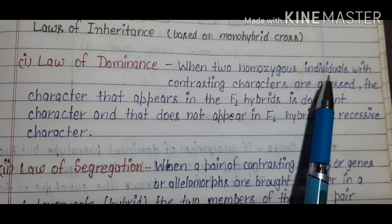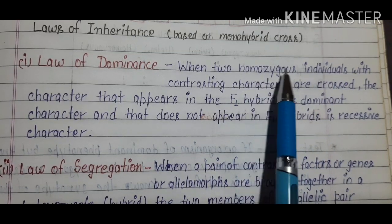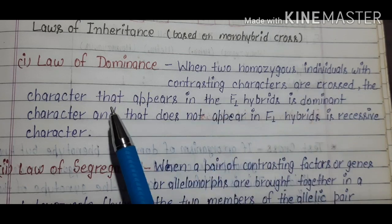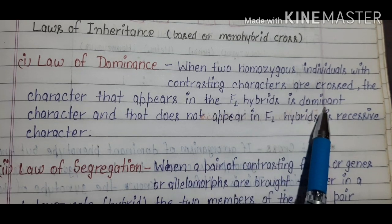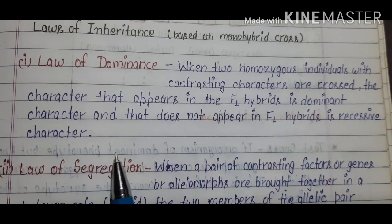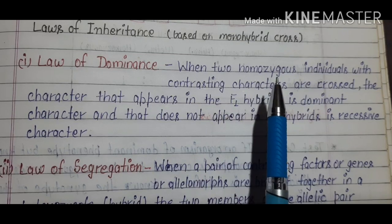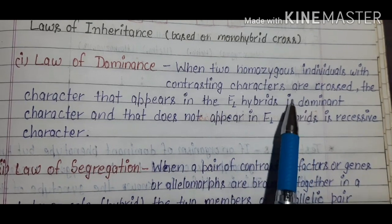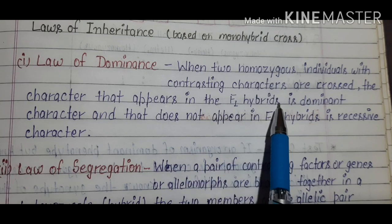Law of Dominance: When two homozygous individuals with contrasting characters are crossed, the character that appears in the F1 hybrid is called the dominant character, and the character that does not appear in the F1 hybrid is called the recessive character. So after crossing two homozygous individuals, only plants with the dominant character grow in the F1 hybrid — the progeny shows only dominant characters. Hence this is called the Law of Dominance.